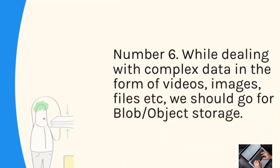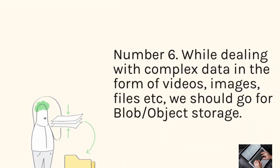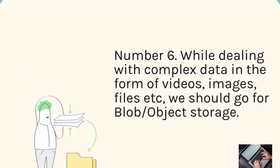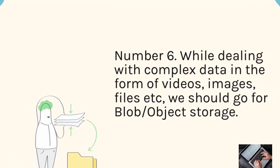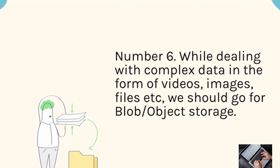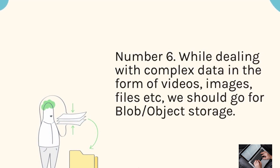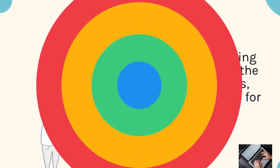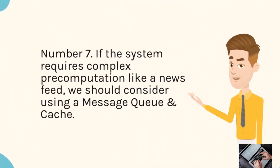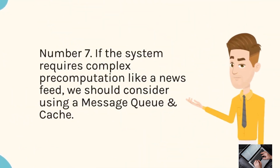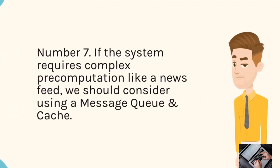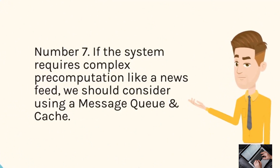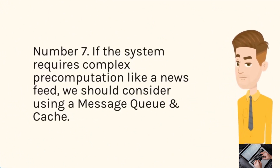Number 6: While dealing with complex data in the form of videos, images, files, etc., we should go for blob/object storage. Number 7: If the system requires complex pre-computation like a news feed, we should consider using a message queue and cache.